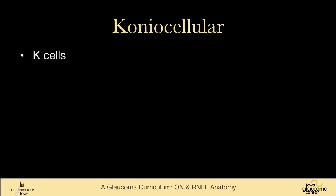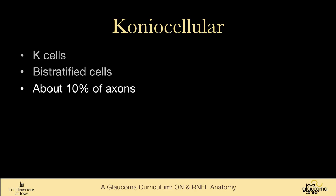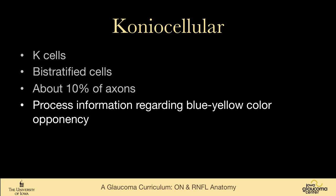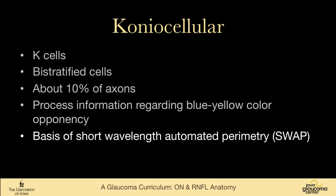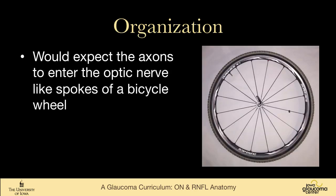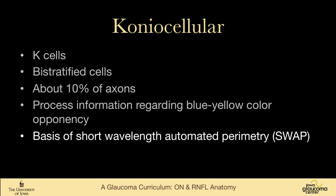The K cells, or coniocellular, are also bistratified cells. Like the M cells, they represent about 10% of axons, and they process information regarding blue-yellow color opponency. That's the basis of short wavelength automated perimetry, or SWAP. Because there are so few M and K cells relative to the P cells, many attempts have been made to detect early glaucoma damage based on loss of M or K cells, since there's not a lot of redundancy in that system.